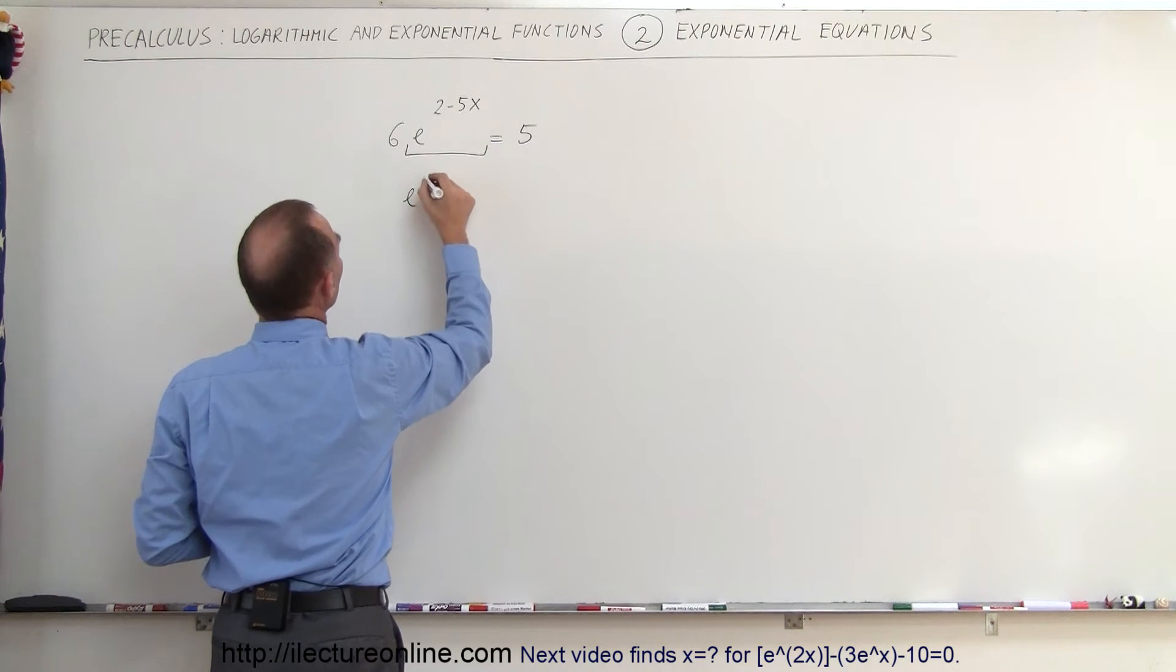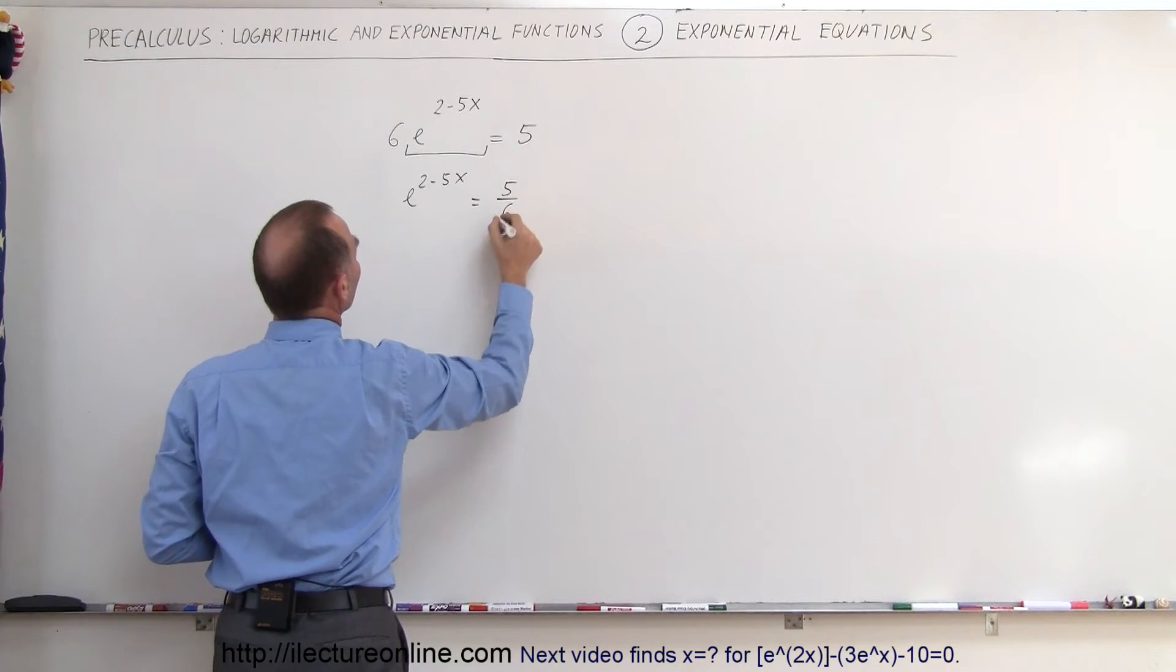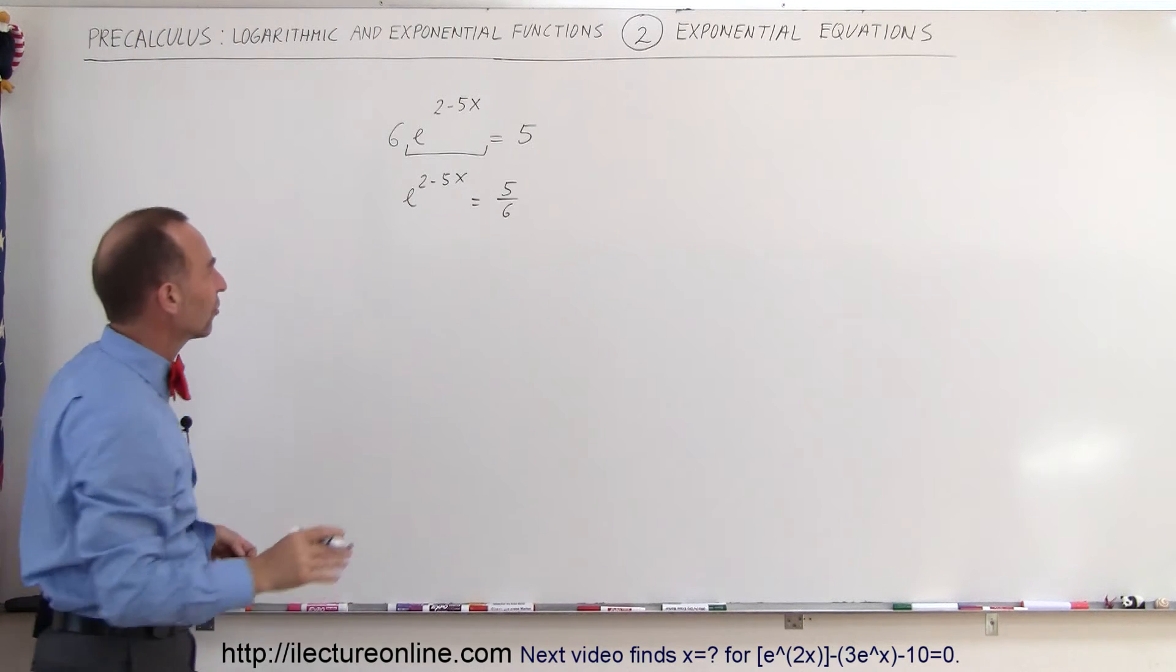So when we do that, we get e to the 2 minus 5x power equals 5 divided by 6, and now we can take the natural log of both sides.